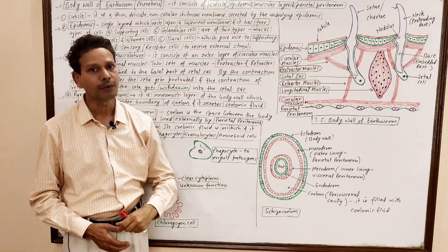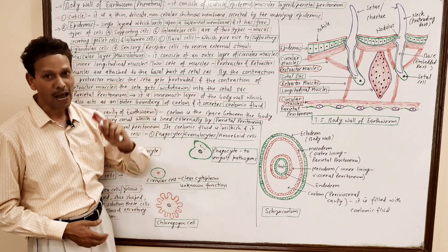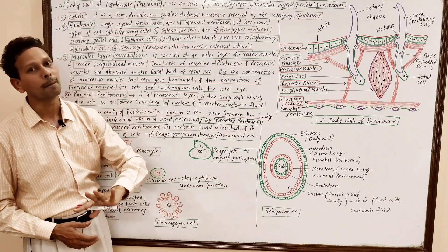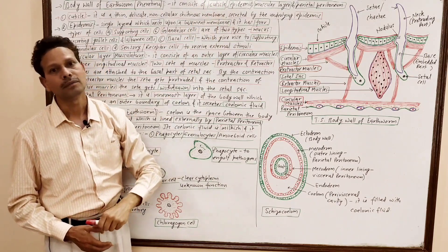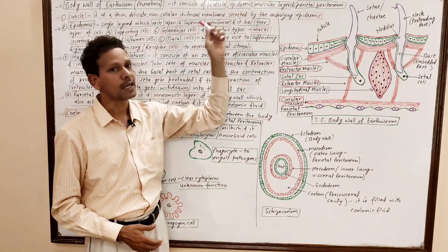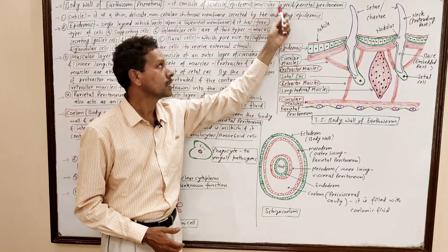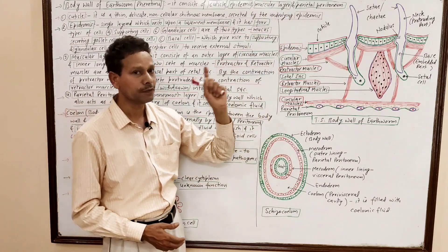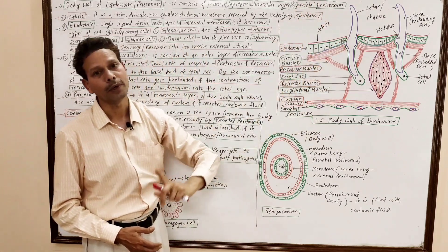First of all, we will discuss body wall. The body wall consists of four components: cuticle, second part is epidermis, third one is muscular layer or musculature, and its fourth component is parietal peritoneum.